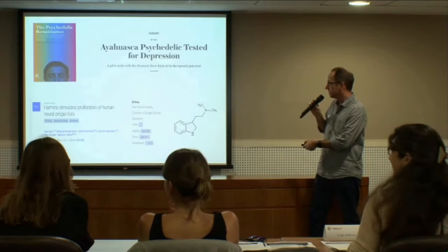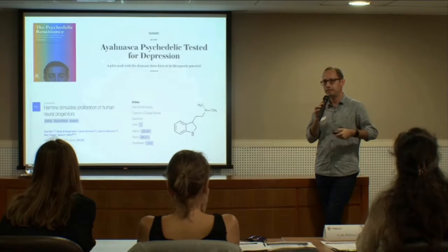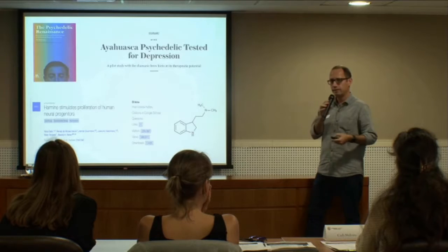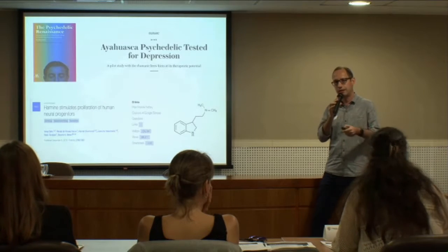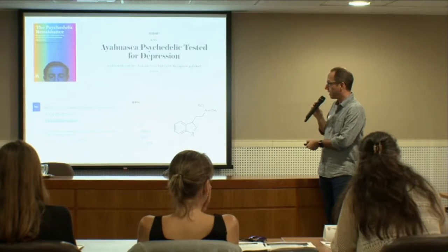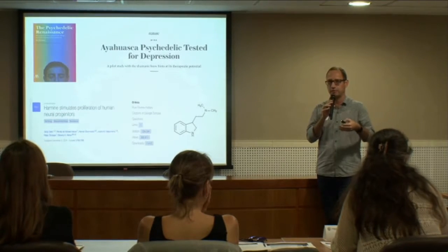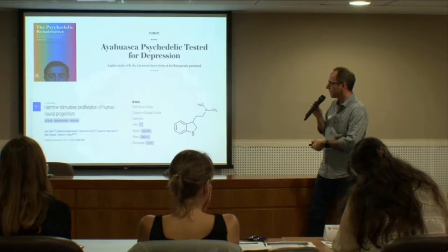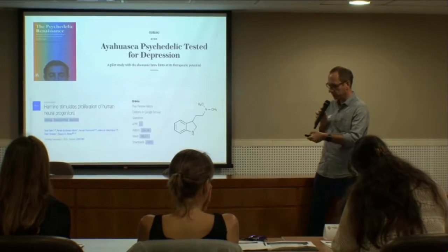Besides DMT, another interesting compound is harmine, which was previously assumed to be only an inhibitor of monoamine oxidase — necessary so that DMT is not destroyed before it reaches the brain. We showed that harmine is also blocking the DYRK1A kinase, which is associated with Alzheimer's disease and other brain diseases. This could be why there is a link with depression, since depression is associated with a decrease in neurogenesis and some antidepressants are known to increase neurogenesis.